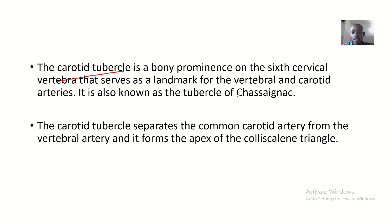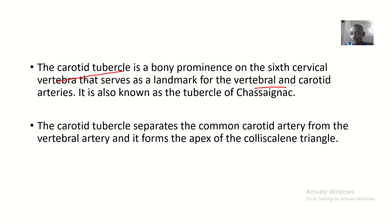It serves as a landmark for the vertebra. When palpating the spine, once you feel the Chassignac tubercle, as a good anatomist you know that this is the C6 vertebra. It is also called the carotid tubercle because the carotid arteries course around that side.